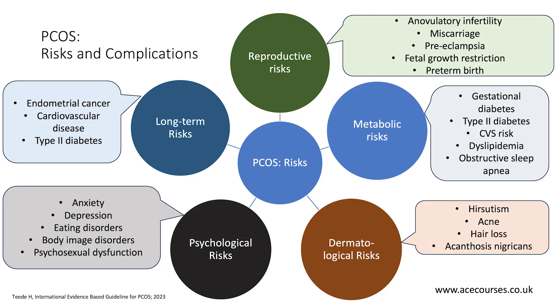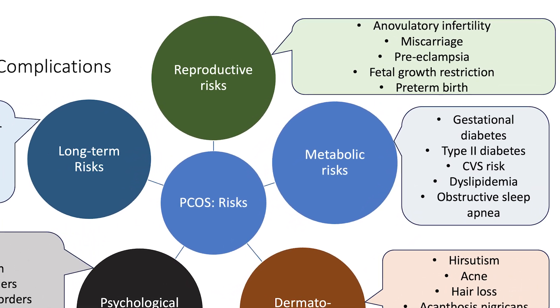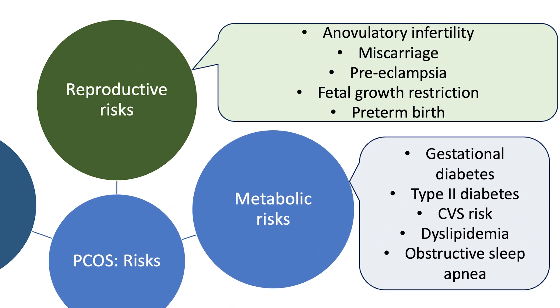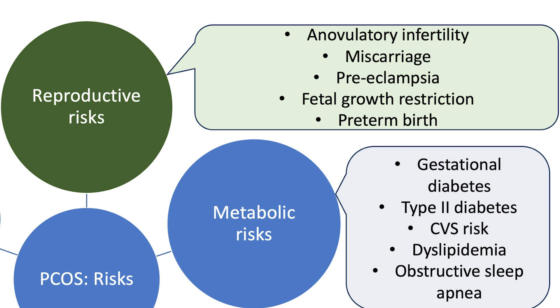In this video we will dive into the management of reproductive risks. You will remember the five reproductive risks from polycystic ovary syndrome from one of the previous videos — namely anovulatory infertility, miscarriage, pre-eclampsia, fetal growth restriction and preterm birth. Let's now look at how you can manage anovulatory infertility.